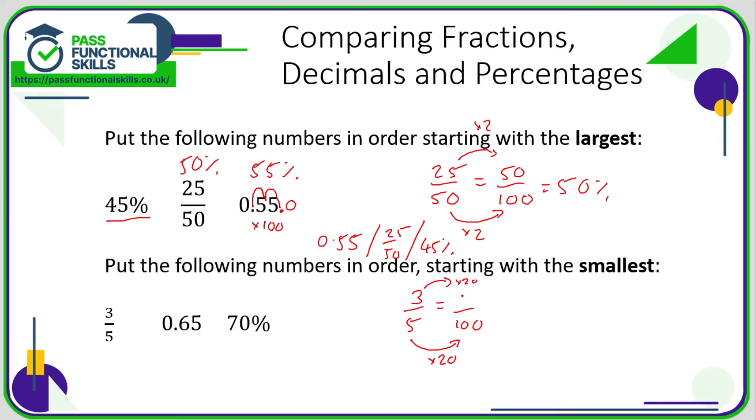And three twenties are 60, so 60 over 100 means 60 percent. Remember, percent means out of 100. So three out of five, or three-fifths, that's 60 percent. 0.65, that's a decimal, so if I multiply that by 100, I'll turn it into a percentage, and that is 65 percent. And then we've got 70 percent.